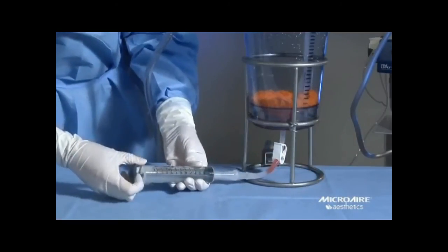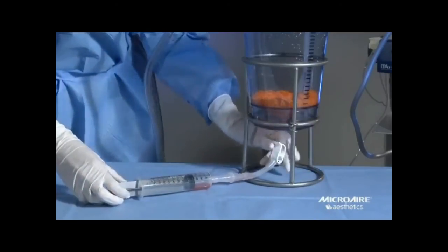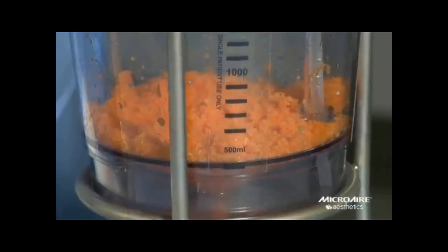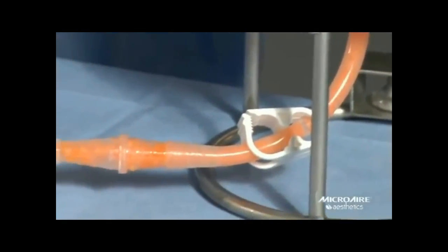Don't forget to close the pinch clamp again before removing the syringe. Reattach the tomy syringe, open the pinch clamp, and draw out the fat.